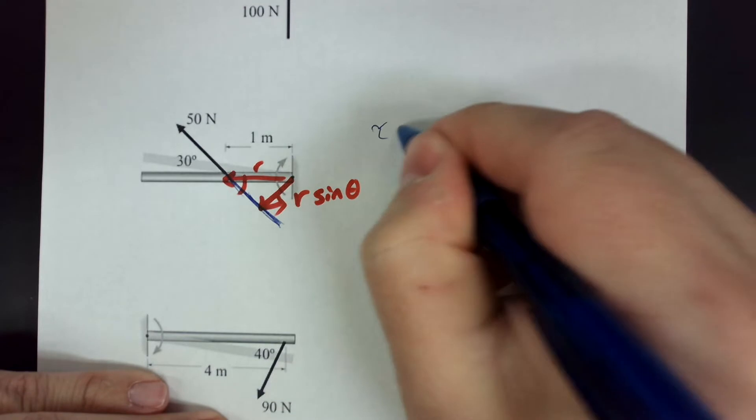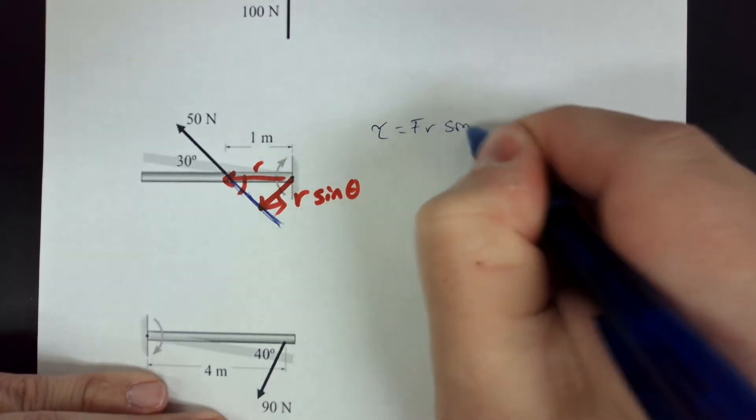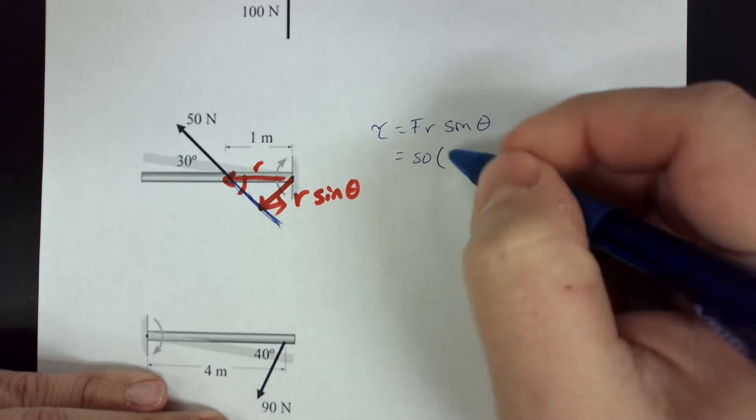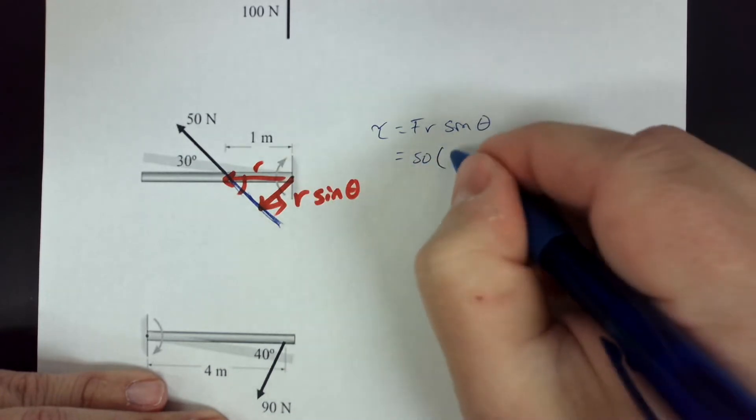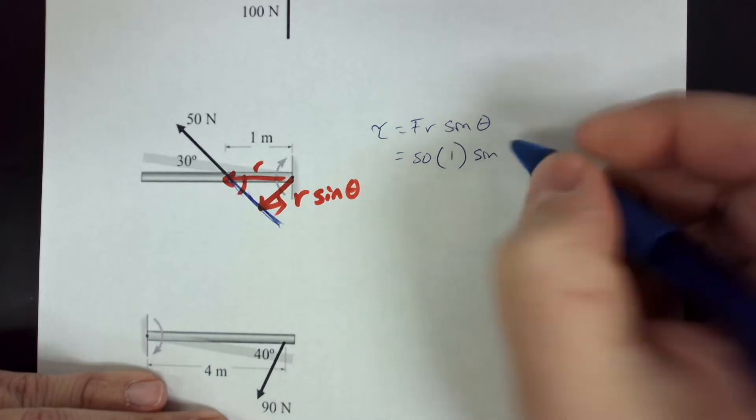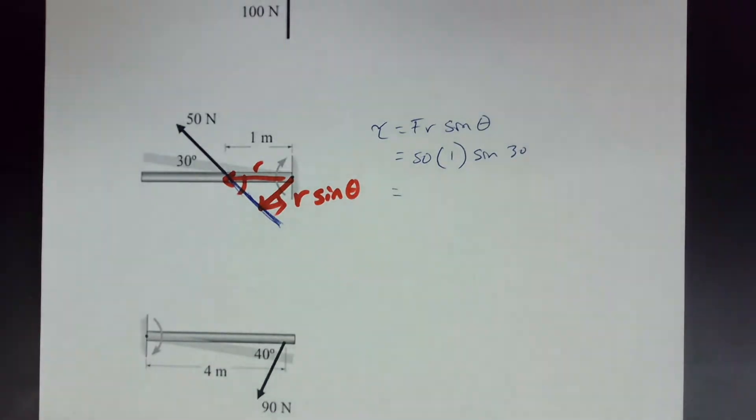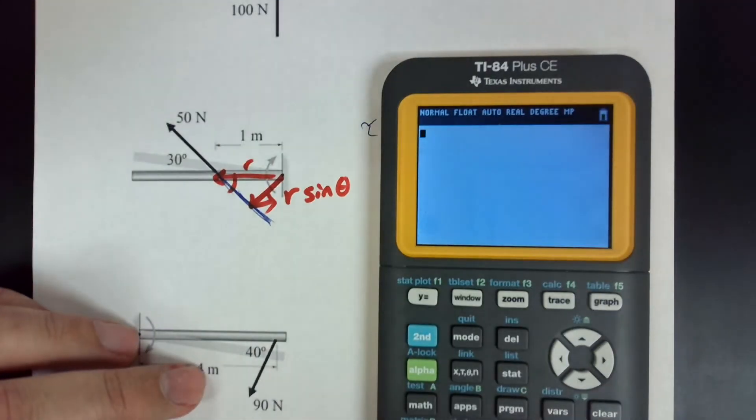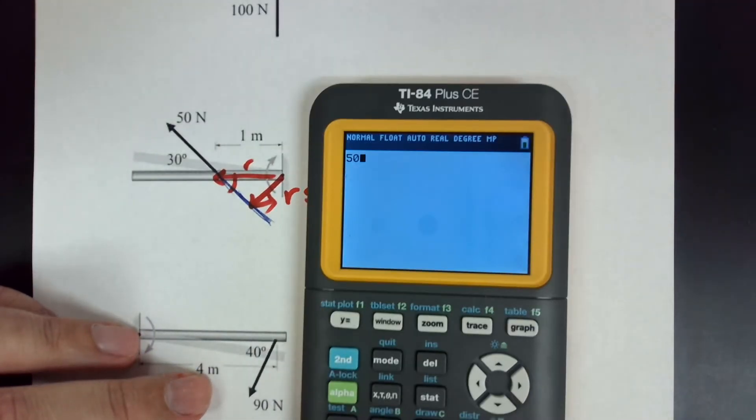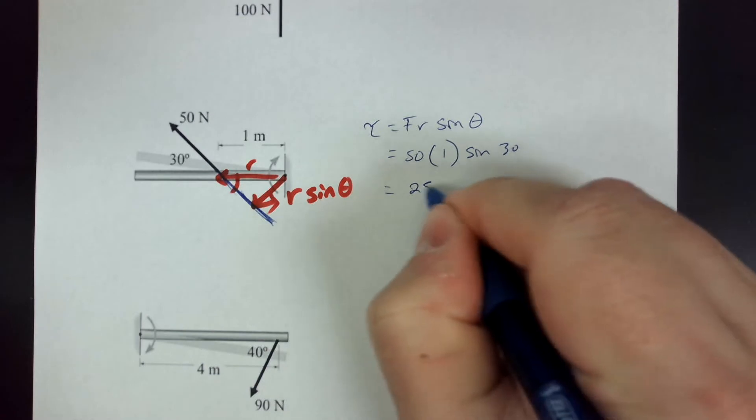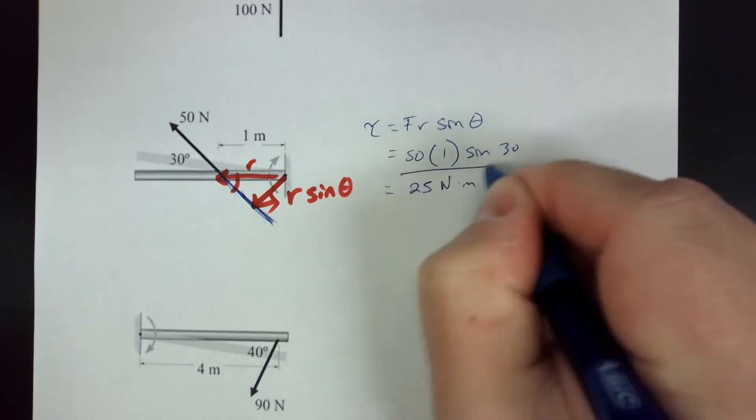So I don't need to do anything special, I just need to multiply my values. So the torque is FR sine theta. That's going to be F is 50 Newtons times R which is 1 meter times the sine of 30. So if you put that in your calculator, 50 times sine 30 gives you 25. I don't need to multiply by 1. So that's 25 Newton meters.